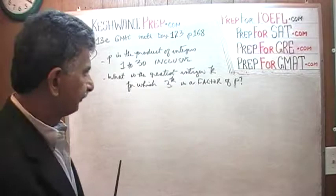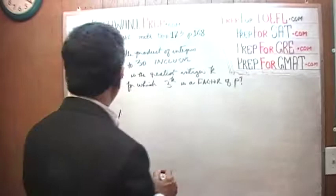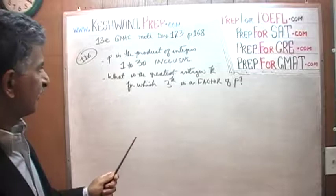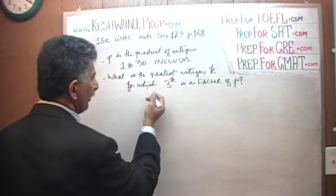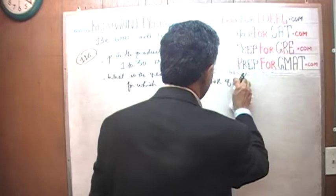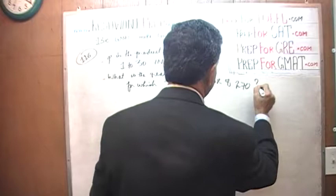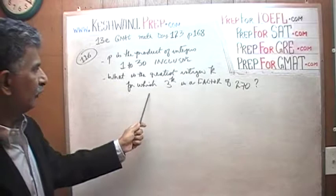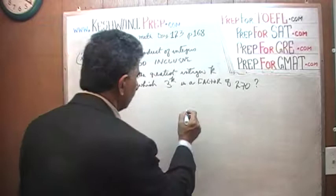Let me give you a simple example. What is the greatest integer K for which 3 raised to K is a factor of 270? Let's find out. 270 can be written as 27 times 10.